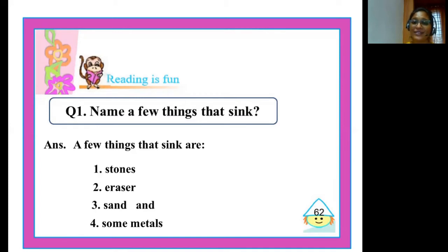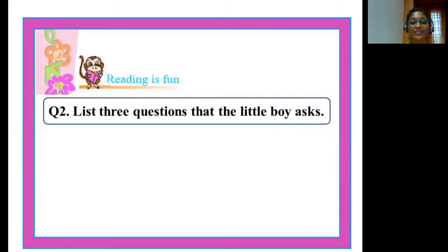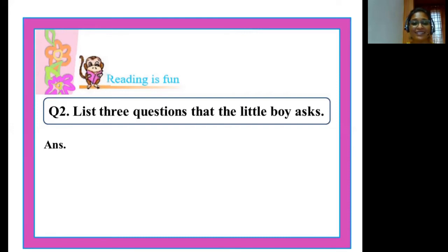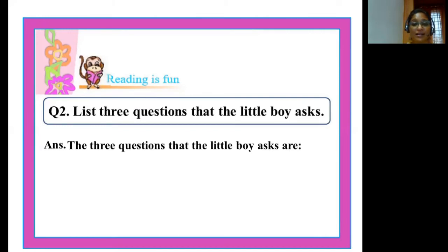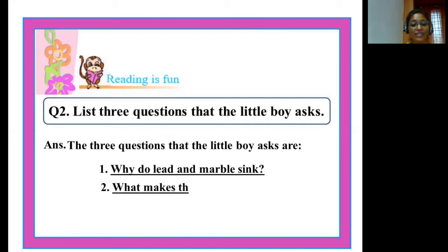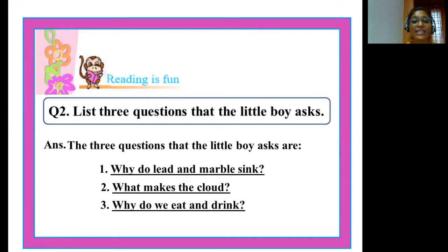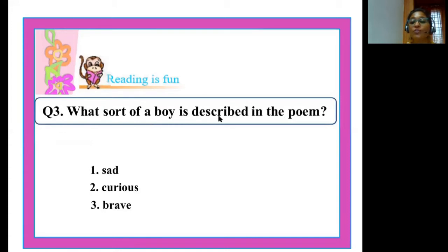Moving on to the second question: list three questions that the little boy asks. There are so many questions the little boy asks — you can pick any three. The three questions picked are: why do lead and marble sink? What makes the cloud? And why do we eat and drink?